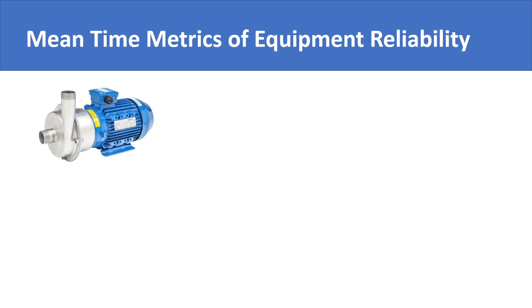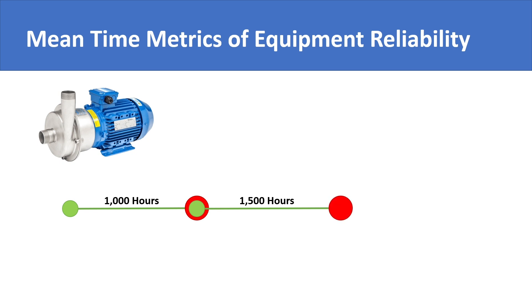Let's say there is a pump that starts operation. It runs for 1000 hours and experiences a failure. The maintenance team repairs the pump and puts it back into service. The pump runs for 1500 hours this time and experiences a failure again. The maintenance team again repairs the pump, and the pump runs for 1200 hours and fails again.